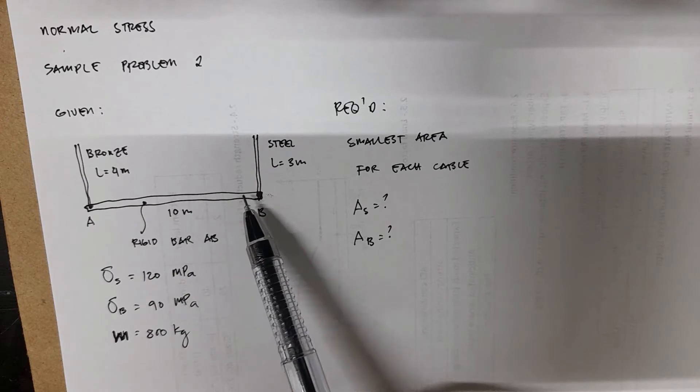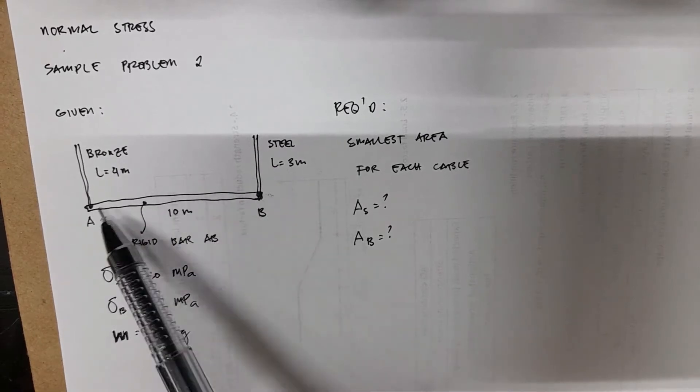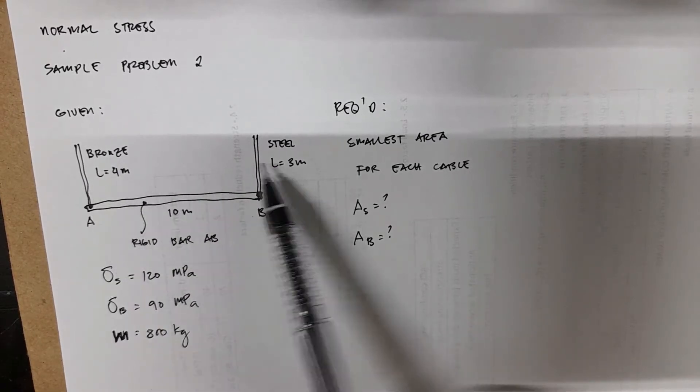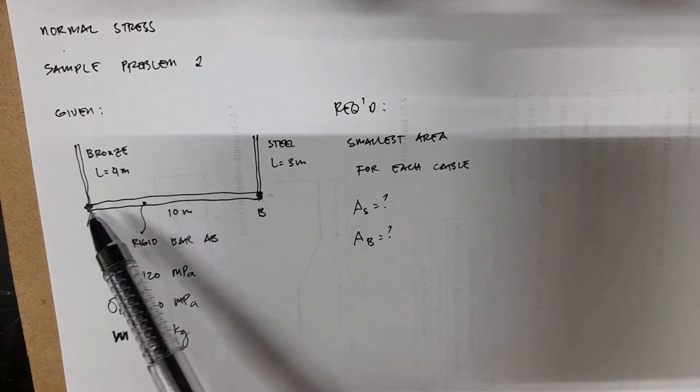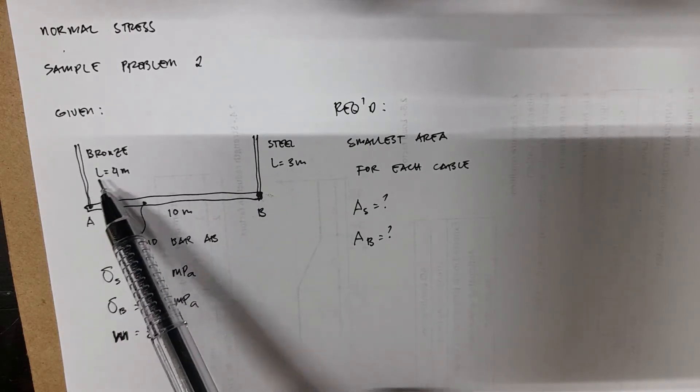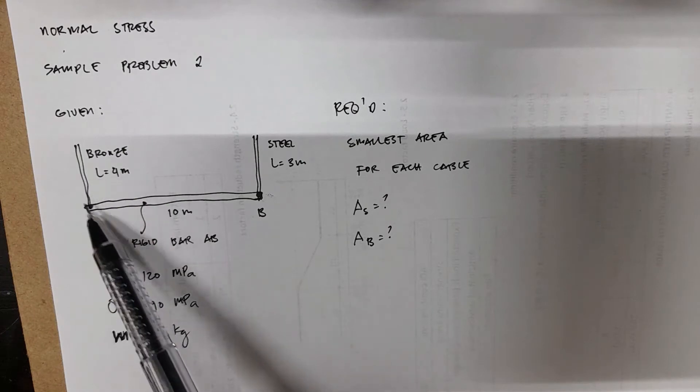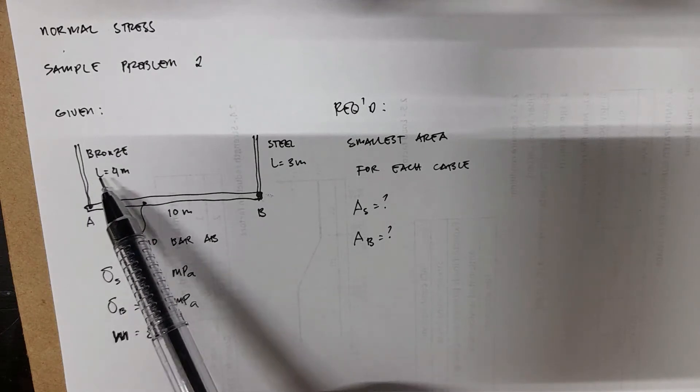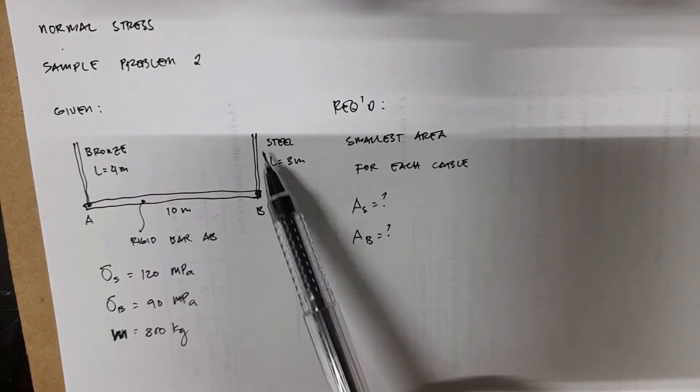AB, this one, which is supported by cables of different materials on both ends. So at point A, the left side, we have a bronze cable supporting the bar. And then at the other side, we have a steel cable.